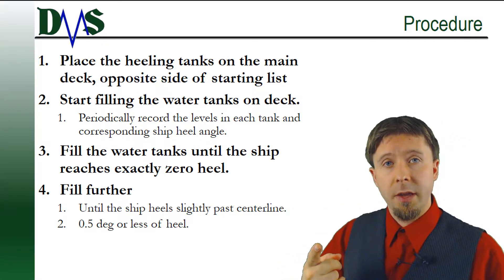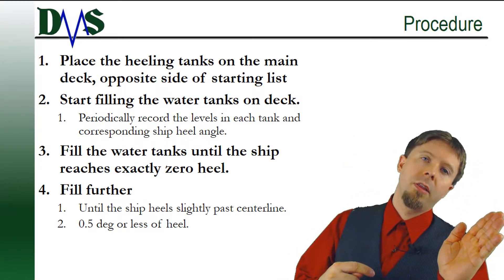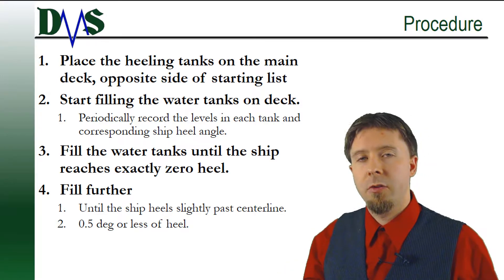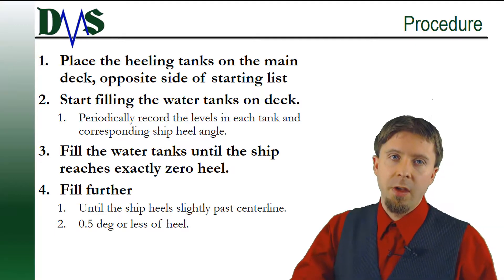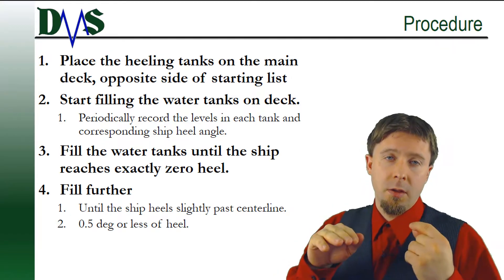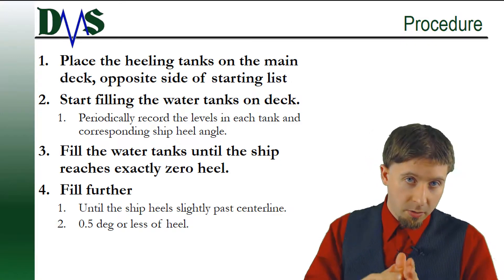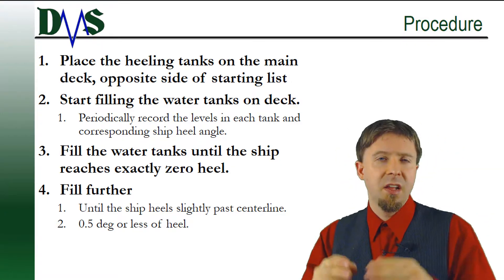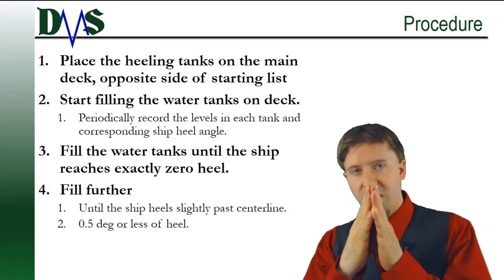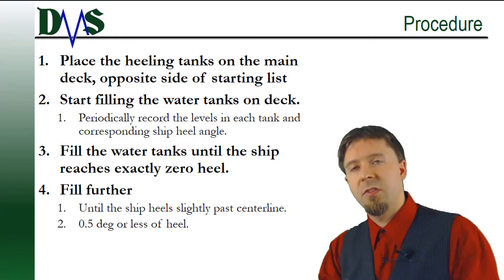Here's the procedure for how to test for an angle of loll. Step one: place your heeling tanks on the main deck opposite the side of your starting list. So if you start out heeling two and a half degrees to port, you're going to put your tanks on the starboard side. Now you start filling the water tanks on deck, continuing until your ship reaches exactly zero heel angle. Stop there and wait. Then continue filling a little bit further to heel the ship slightly to the opposite side — half a degree or less. So if you started at two and a half degrees port, first fill until you reach exactly zero, then fill a little more until you get slightly past zero on the starboard side.